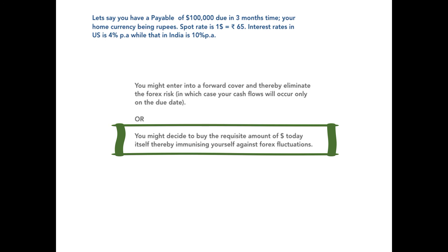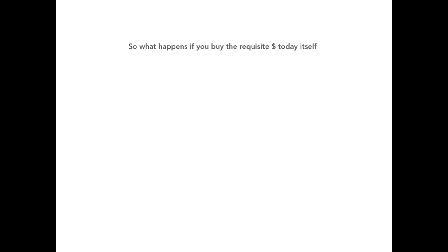So this implies that I need not purchase $100,000 today. I need to purchase less than $100,000, so that if I invest that amount, then along with the interest I will have $100,000 on the due date, and on the due date I will hand over this $100,000 to my supplier to settle the payable. Now the question is: how much dollars should I purchase today? Before we calculate that, let us first understand the various cash flows and their implications in the money market hedge.